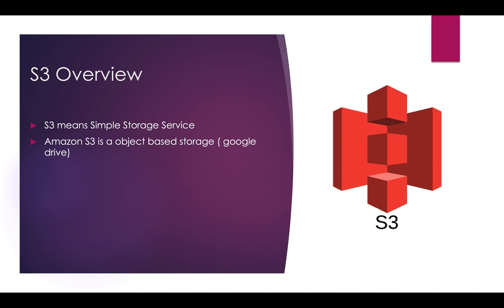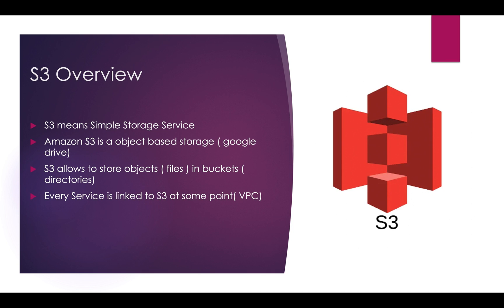In Amazon S3, in real time if you are using Windows or Linux we call them files and directories. A file is nothing but an object, and a directory is nothing but a bucket in S3. S3 allows you to store objects in buckets — that means files in directories. Every service is linked to S3 at some point. For example, if you create an EC2 instance, in the backend it will create some logs, and you can attach these logs to S3.